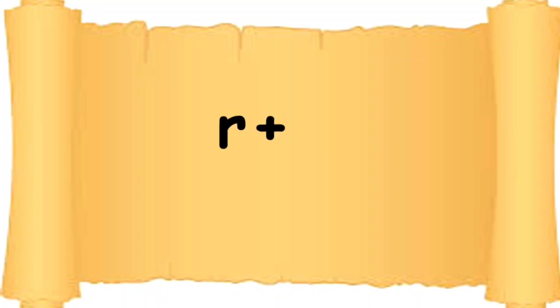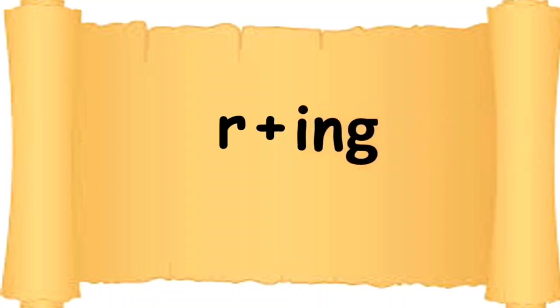The next word is: R. After R, here is a plus, and now comes 'ing.' We find the word: Ring. Children, please repeat after me. R-ing. Ring.